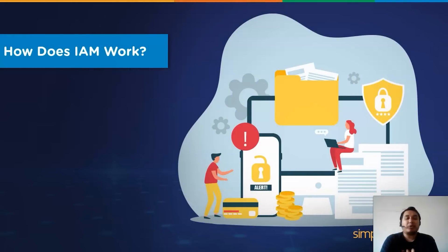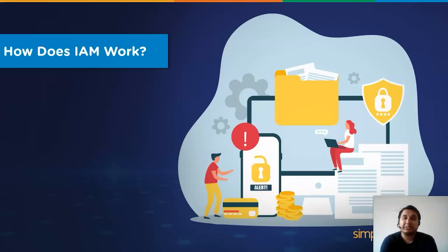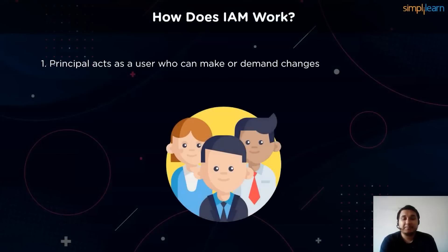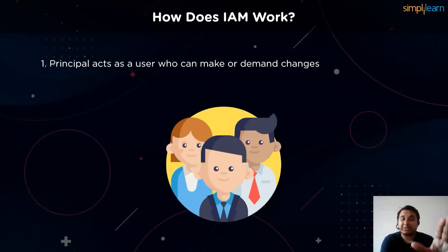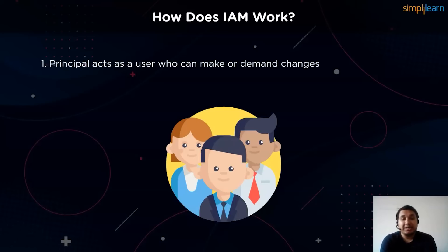Now that we understand the importance of IAM in today's cybersecurity sphere, let us understand the process of this framework. We have multiple components that aid this process. A principal is an entity that can perform actions on an AWS resource or any cloud management system. A user, a role or an application can be a principal. It's always the principal who raises a concern to access or modify data on servers, serving as the first point of contact in the IAM workflow.